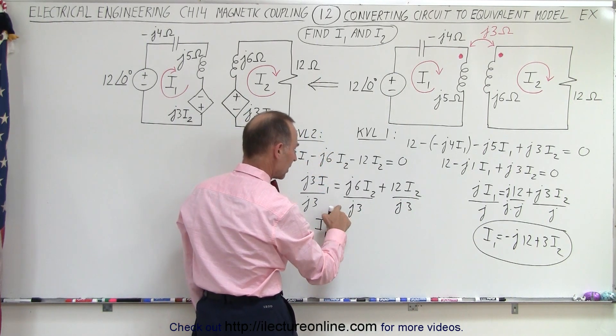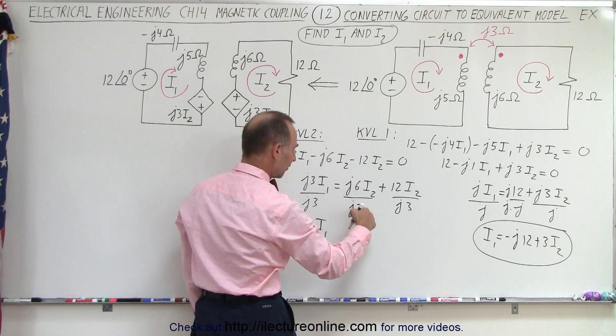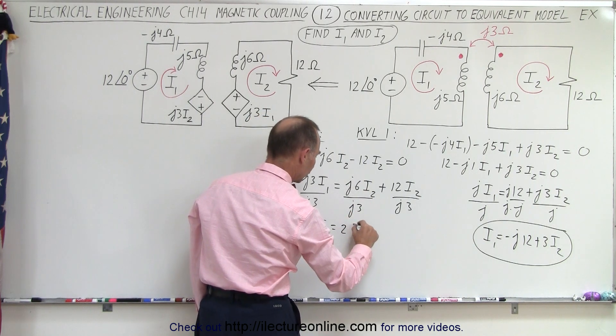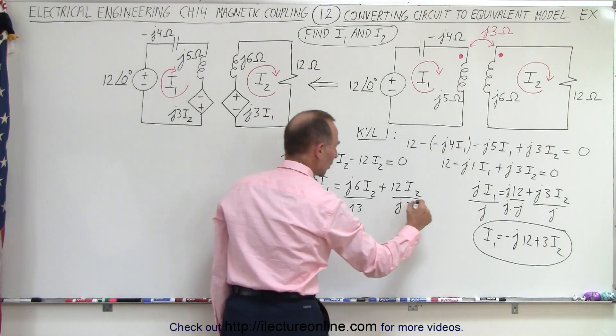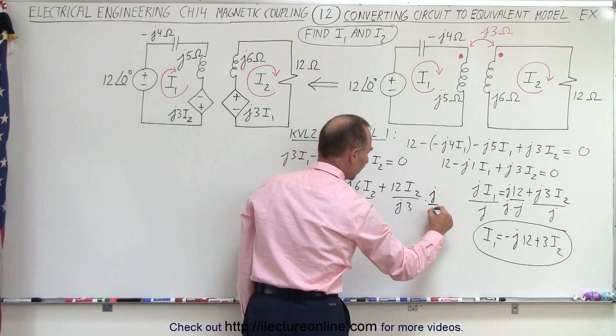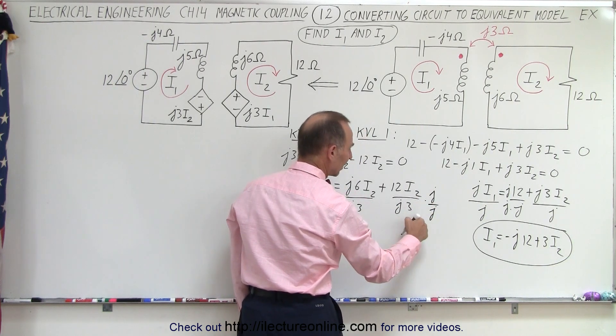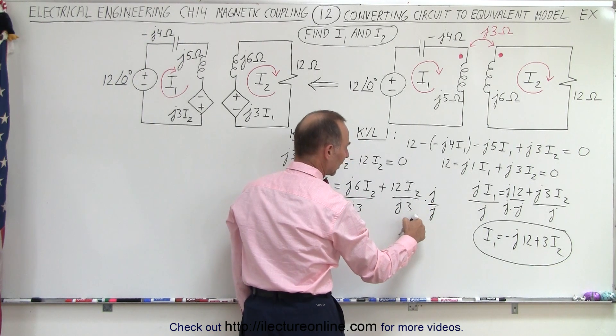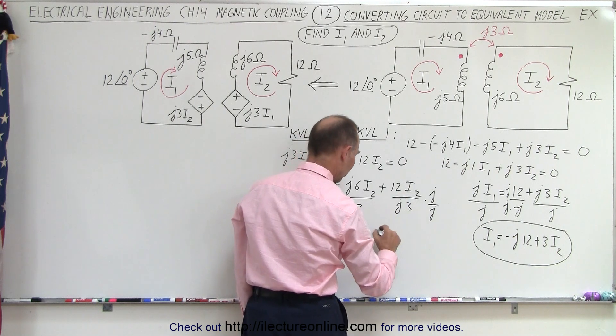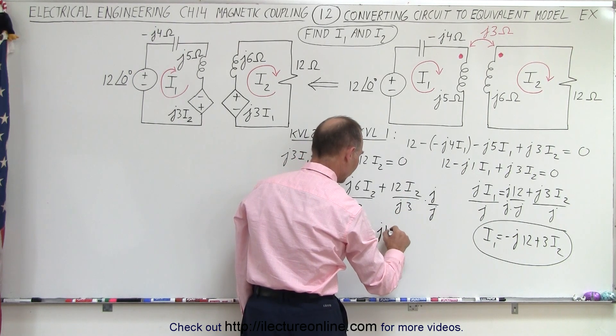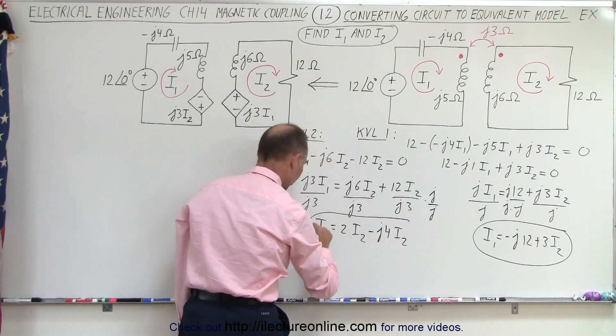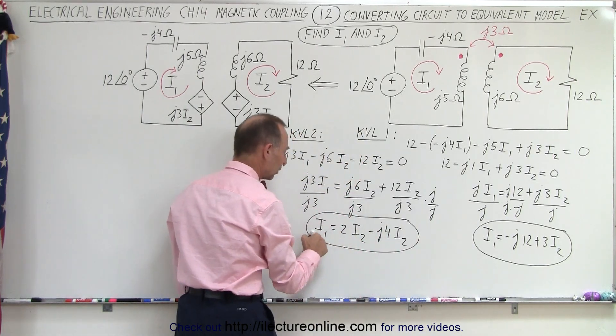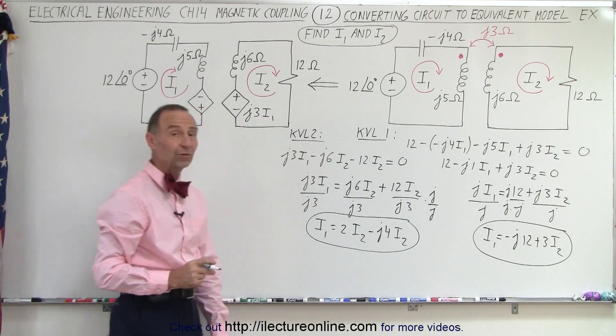So the J3s cancel out. We have I1. Here Js cancel out. 6 divided by 3 is equal to 2I2. And here we multiply both the top and the bottom by J. We get a negative 3 at the bottom. So we have negative 3 goes into 12, negative 4, so that's negative J4I2. And so there's our second equation with I1 in terms of I2.